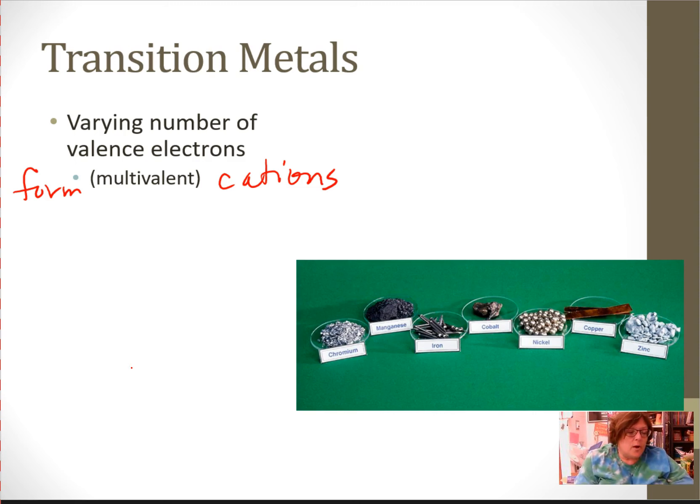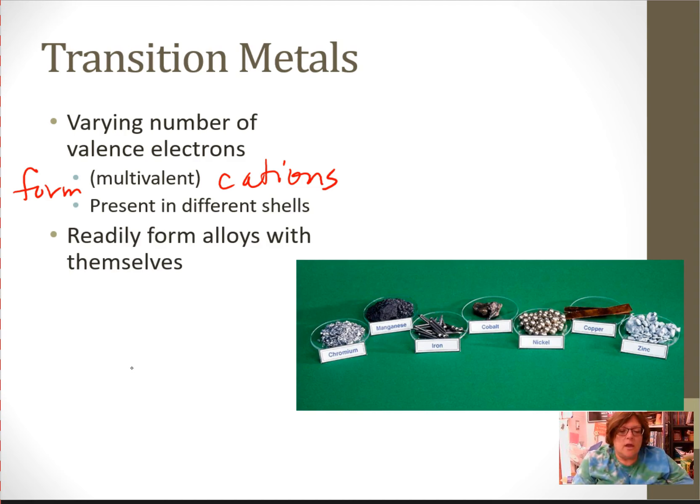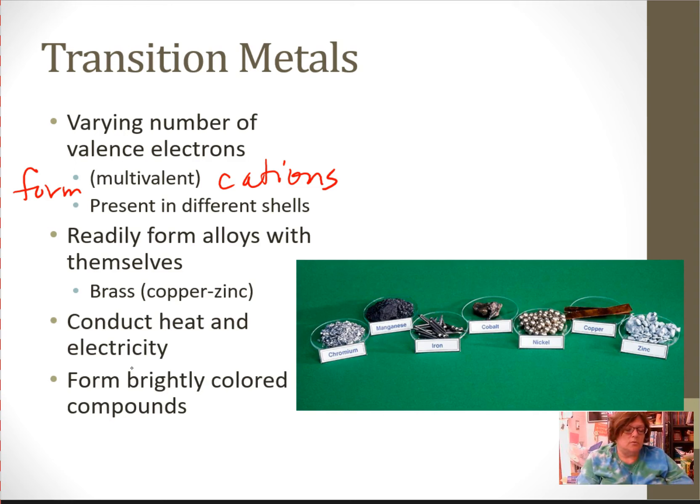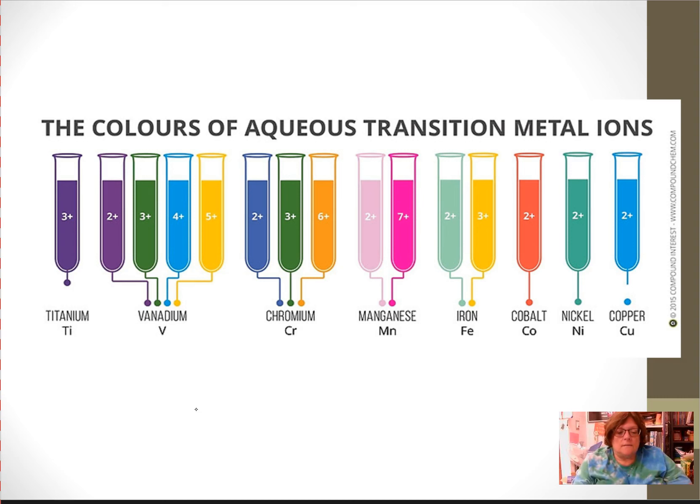And they're present in different shells. They form alloys. They conduct heat and electricity, and most important, well not most importantly, but one that is commonly talked about, they form brightly colored compounds. And this slide shows you, these are solutions, so they've taken salts, titanium plus 3 salt. When you dissolve him in water, he gives you a purple color. Vanadium can give you either a purple, a green, a blue, or a yellow. Chromium, blue, green, and orange. Manganese, some pinks.